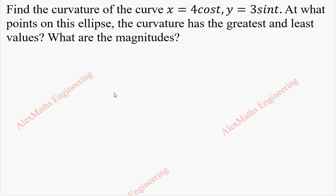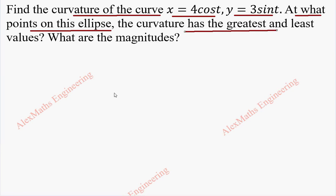Hi students, this is Alex here. In this video, we are going to find the curvature of the curve x equals 4cos(t) and y equals 3sin(t). This is the first part. Then, we are also asking at what point on this ellipse the curvature has the greatest and the least values.